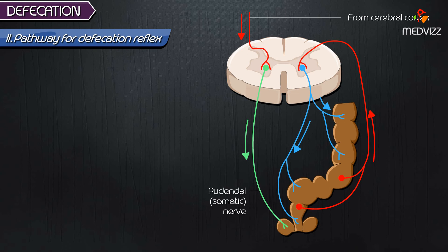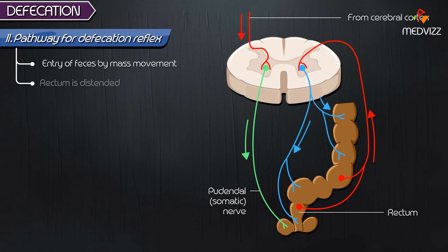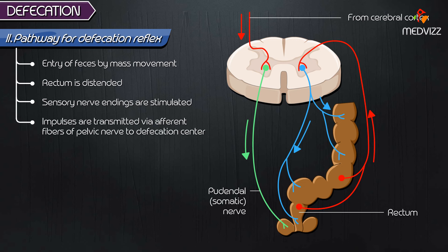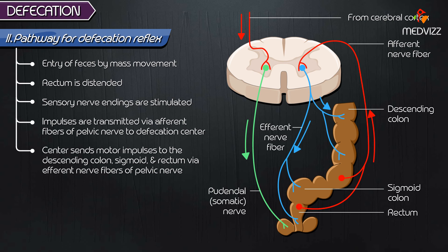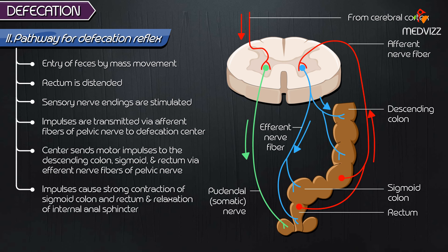Pathway for defecation reflex. There is entry of feces by mass movement. The rectum is distended, sensory nerve endings are stimulated, and impulses are transmitted via efferent fibers of the pelvic nerve to the defecation center. The center sends motor impulses to the descending colon, sigmoid, and rectum via efferent nerve fibers of the pelvic nerve. These impulses cause strong contraction of the sigmoid colon and rectum, and relaxation of the internal sphincter.